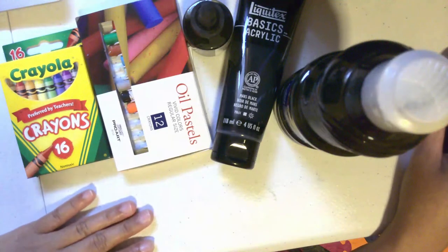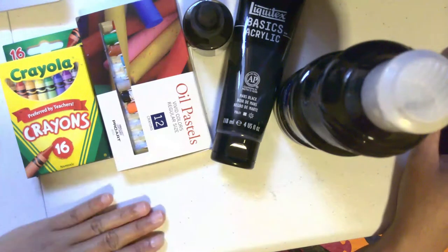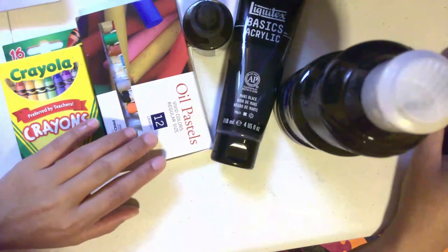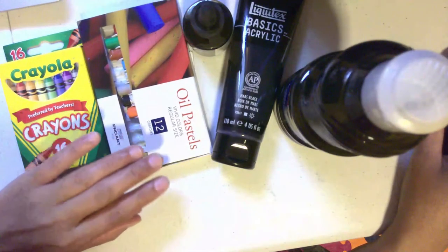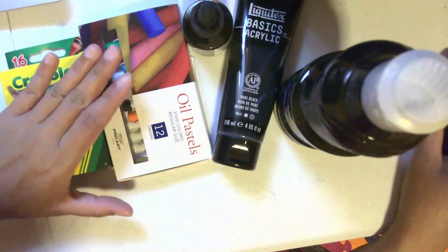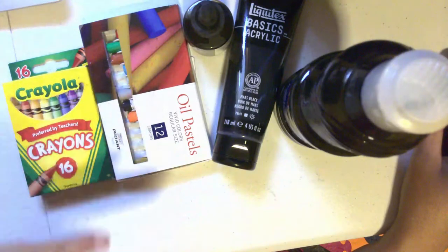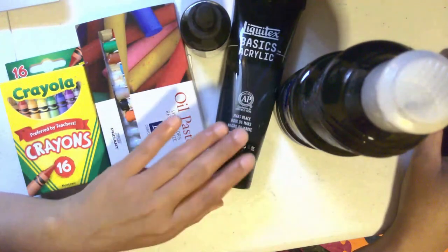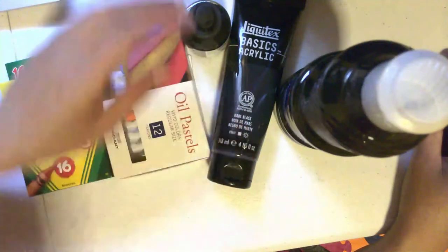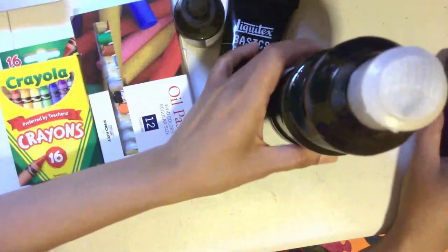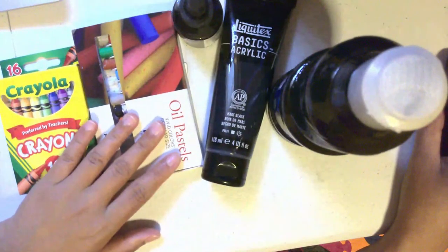In this video, I'm going to show you how to make your own scratchboard. Now there are already a lot of videos out there that tell you you can use oil pastel sticks or crayons first on a white paper or cardstock and then you can paint over it with acrylic. In some videos they tell you to use India ink, in some videos they tell you to use tempera paint. I actually tried all of them and not all of them work.